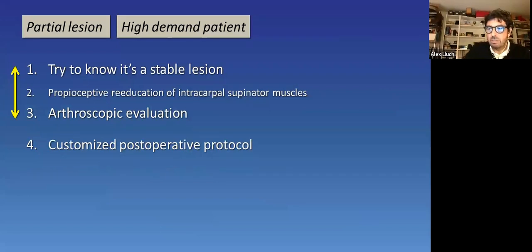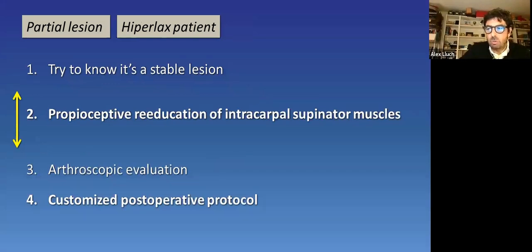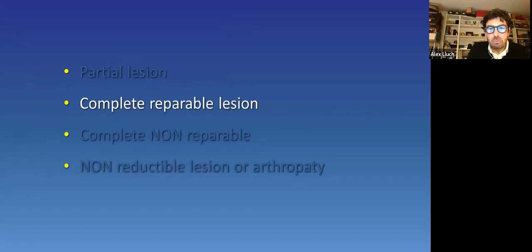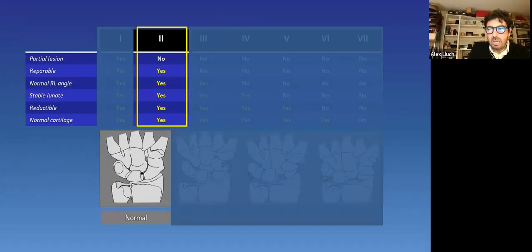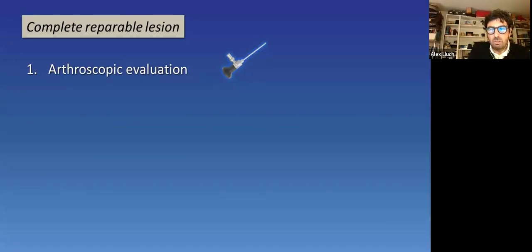The same situation of a partial lesion in a high demand patient can be a little bit different in terms of time. Steps are the same, but they may prefer to shorten times or maybe lengthen them till the end of a sports season ends, for example. In the case of a hyperlax patient, we would insist and extend conservative treatment prior to surgery if it's possible. Let's move and see what we do if we have a complete reparable lesion. That will place us in a still well-aligned wrist.